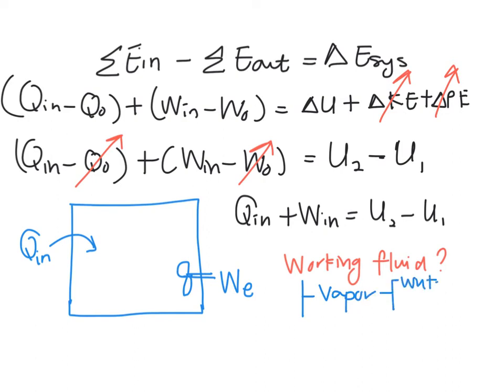So now we need to consider the working fluid. In this case it could be either water or your refrigerant like R134A. So when you want to solve for U_2 or U_1, you will refer to your property table.